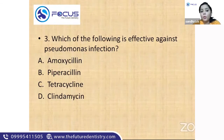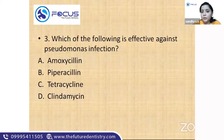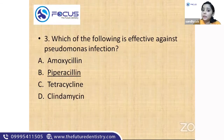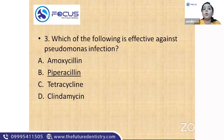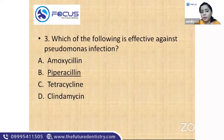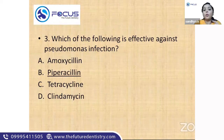Next question: 'Which of the following is effective against pseudomonas infection?' Answer: piperacillin. Among penicillins, piperacillin (extended-spectrum) has the best anti-pseudomonal action. In regular classes, all other antibiotics effective against pseudomonas will also be covered.